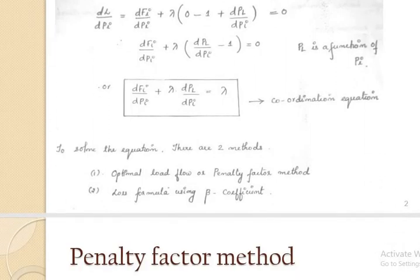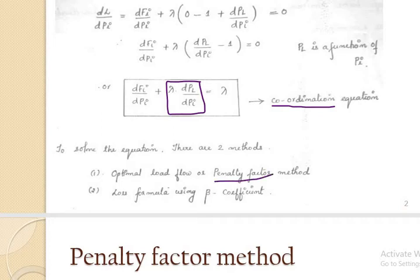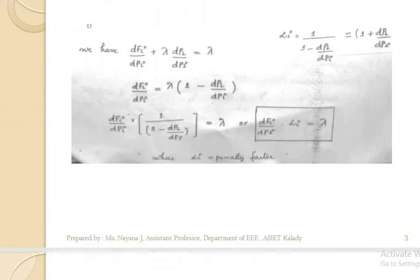Refreshing, this was our coordination equation: dFi/dPi + λ × dPL/dPi = λ. This dPL/dPi is the term associated with transmission loss. To solve this term, we have two methods. One is the penalty factor method and the other is the beta coefficient method. In the penalty factor method, the penalty factor is represented as 1 / (1 − dPL/dPi).